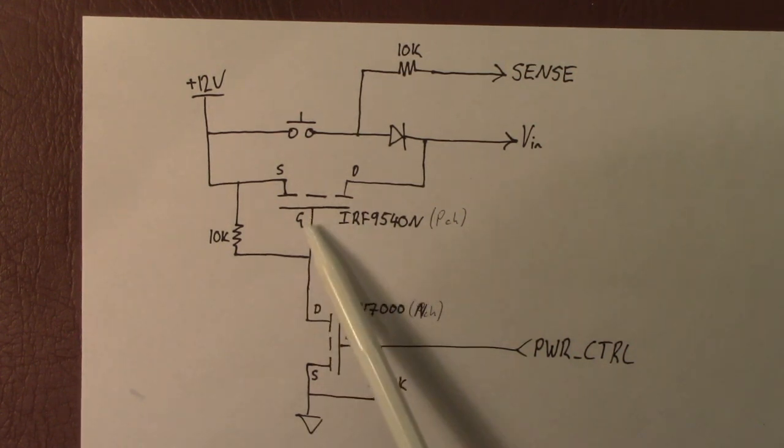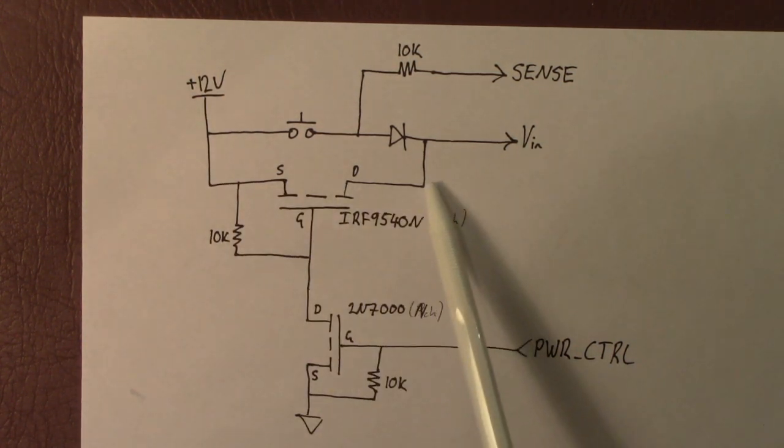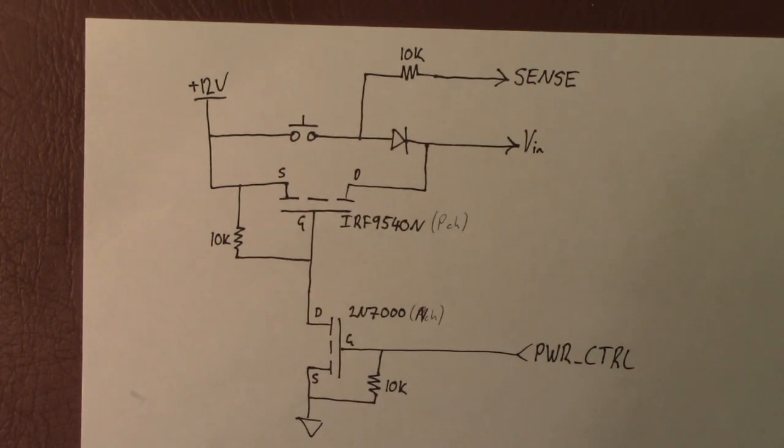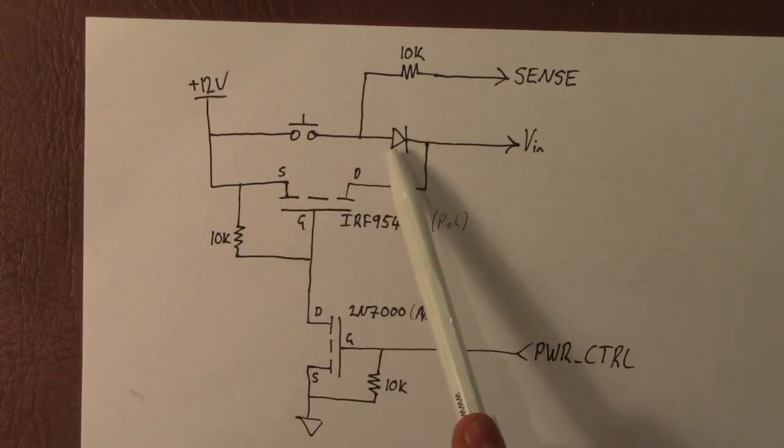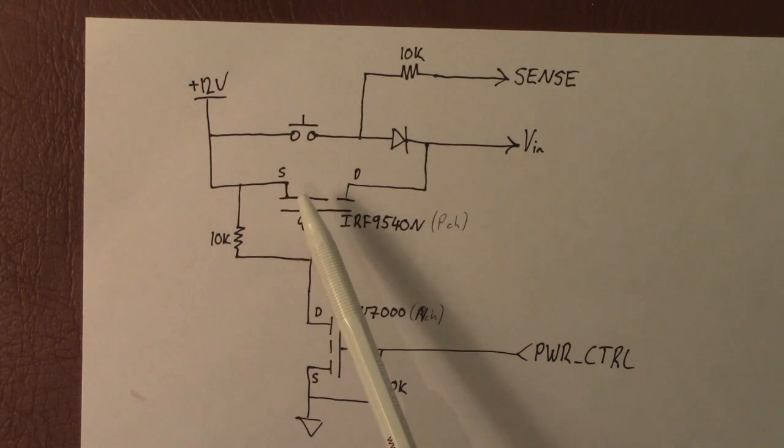That's going to pull the gate of the P-channel MOSFET to ground which will turn it on and that will short out the series diode and the switch. And that's the important part. You're shorting out the diode so you've got no parasitics aside from whatever resistance you've got in your RDS on for your P-channel MOSFET.